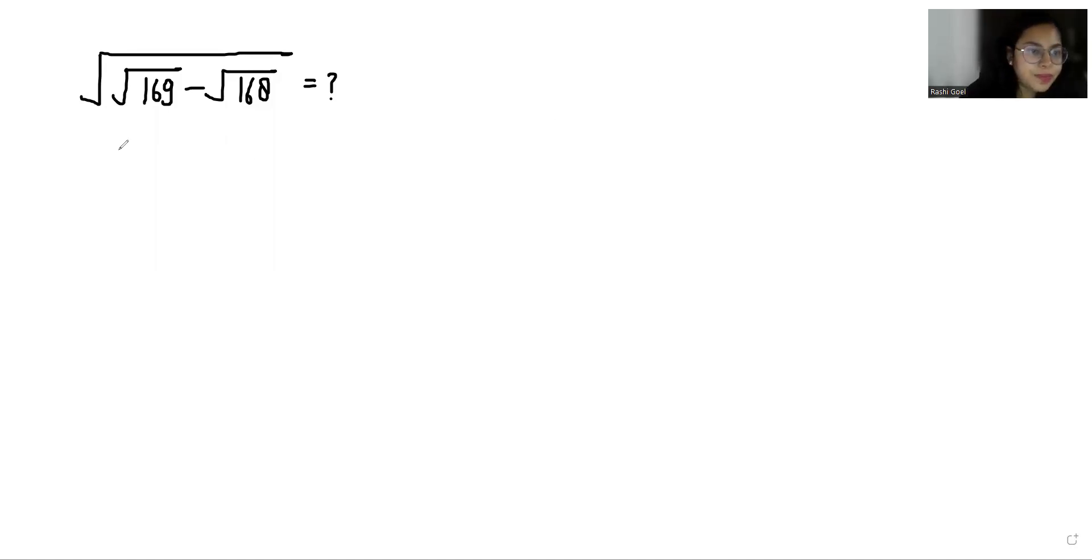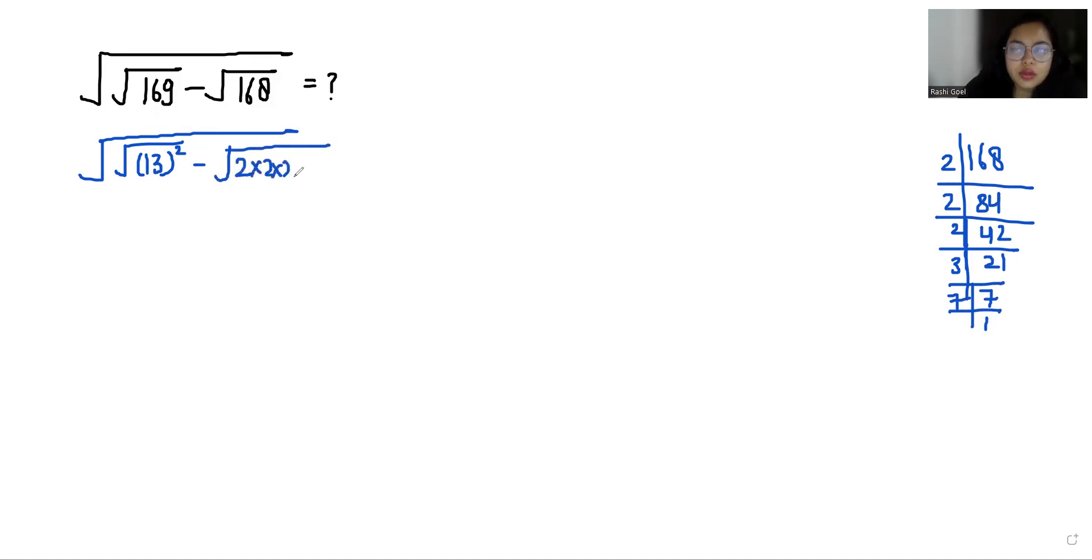Square root under square root 169, we can write it as 13 square minus 168. If we do the prime factorization, we can divide by 2 so it becomes 84, again with 2 to get 42, again with 2 to get 21, now 3, 7, and 7 times 1. So we can write this as 2 times 2 times 2 times 3 times 7.